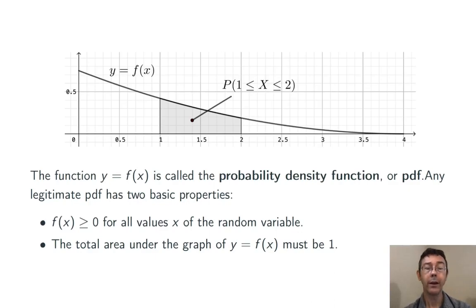Secondly, the total area under the graph of a legitimate PDF should always be 1. This is encoding the idea that when we do a probability experiment, we have to get some value of x out.